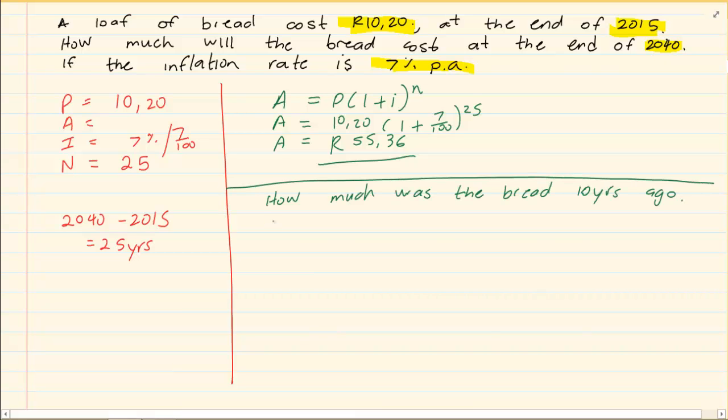Again they are asking how much was the bread 10 years ago? Now if you write down your P, A, I, N, this is where the trick comes in. 10 years ago was our P. Now is our A which means they are actually giving us our A. Because remember 10 years ago that means we are trying to calculate what was it then. What was it 10 years ago which is our P. Our A is what is now.